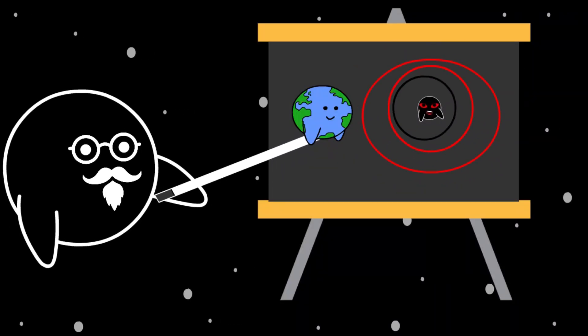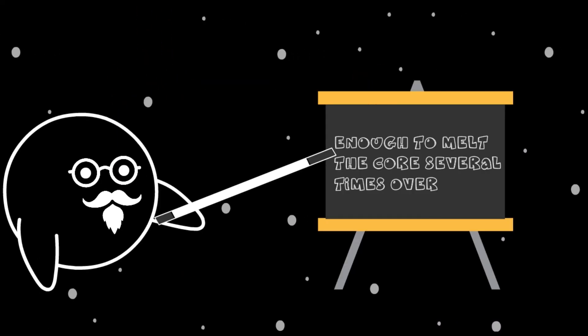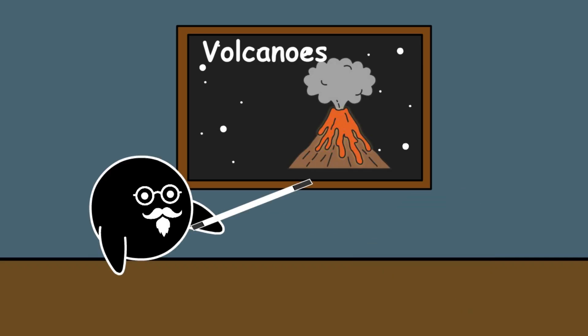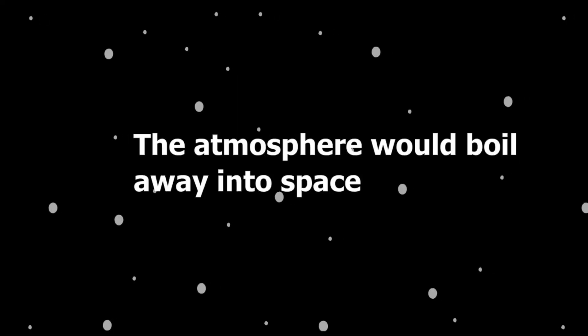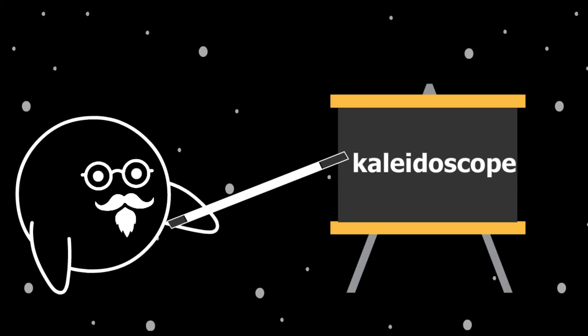The friction from the tidal forces would generate incredible heat inside the planet—enough to melt the core several times over. Volcanoes would cover every inch of the surface. The atmosphere would boil away into space. Oceans would turn into steam. The night sky would twist into a kaleidoscope.